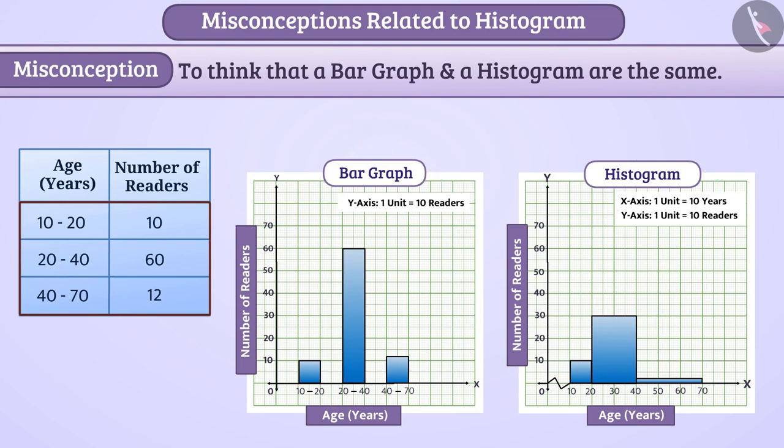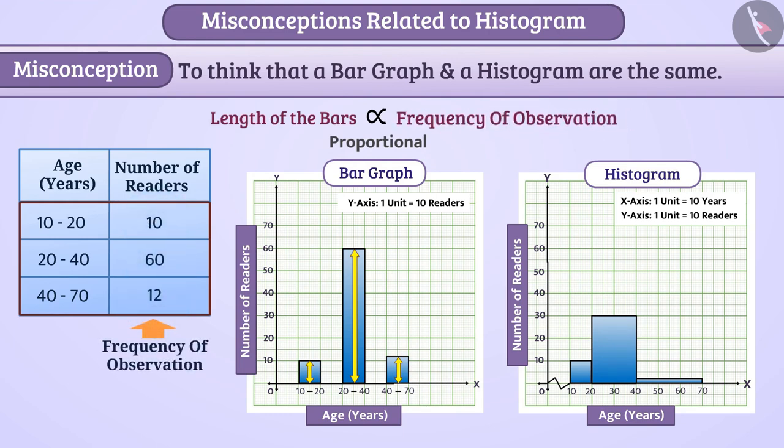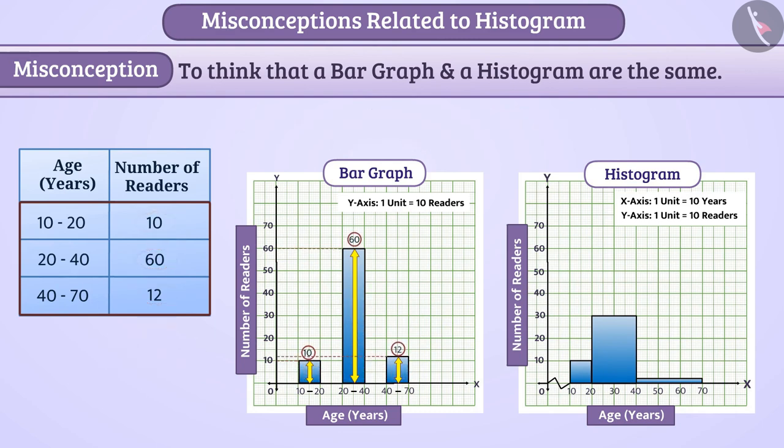For example, in a bar graph the length of bars is proportional to the frequency of observation. That is, the frequency of observations is represented as the length of bars. Whereas the area of rectangles in the histogram is proportional to the frequency of the class intervals. That is, the frequencies are represented as the area of rectangle and not the length of the rectangle.